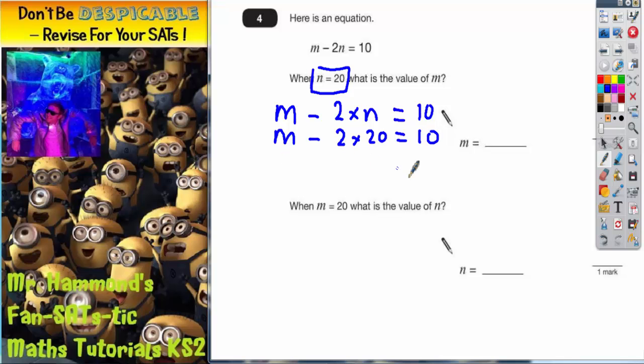Now we can simplify it. We can't do anything with the m yet, so that stays as it is. 2 times 20 is 40, and that is equal to 10.